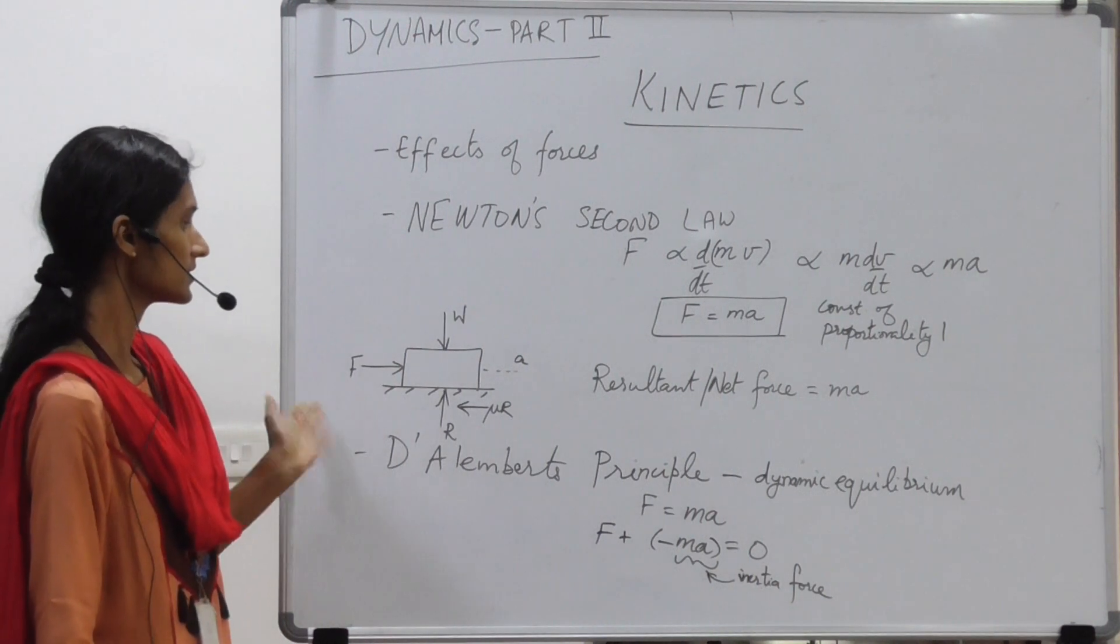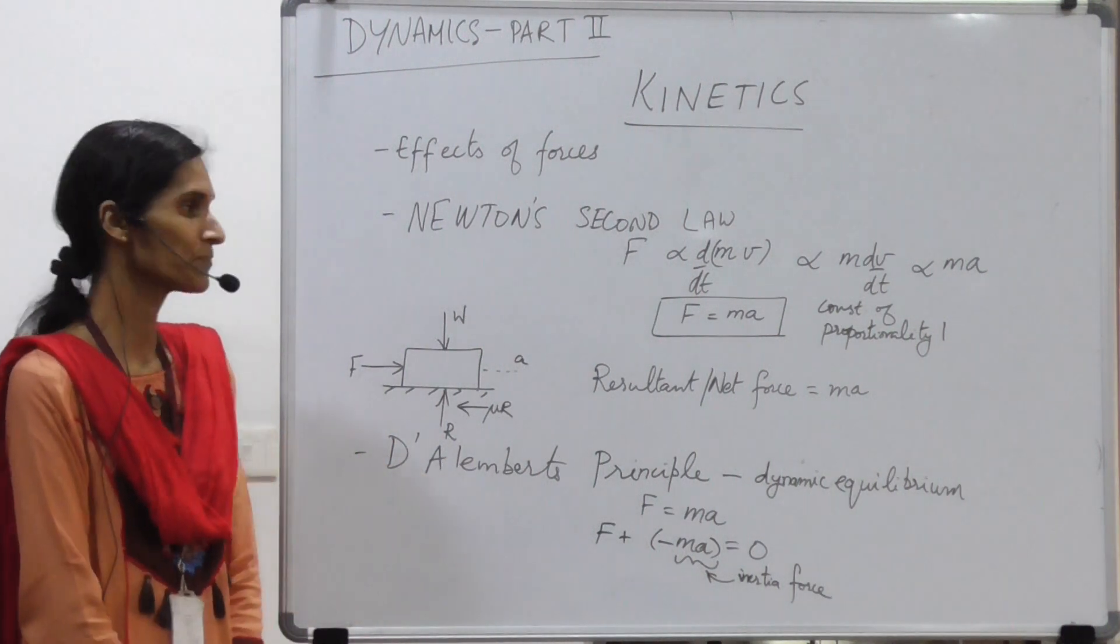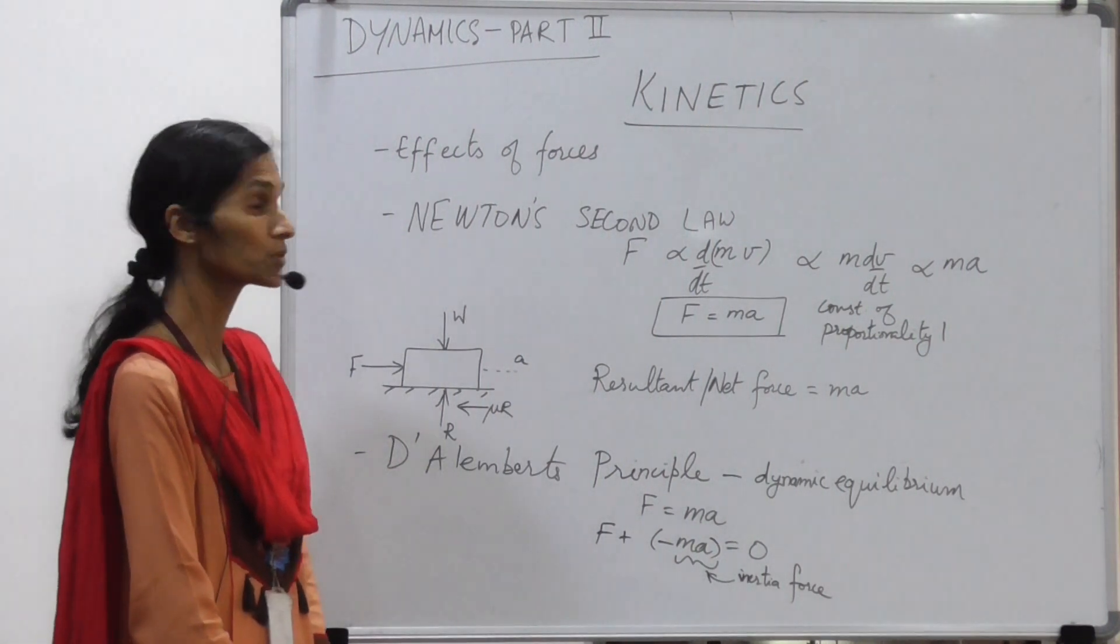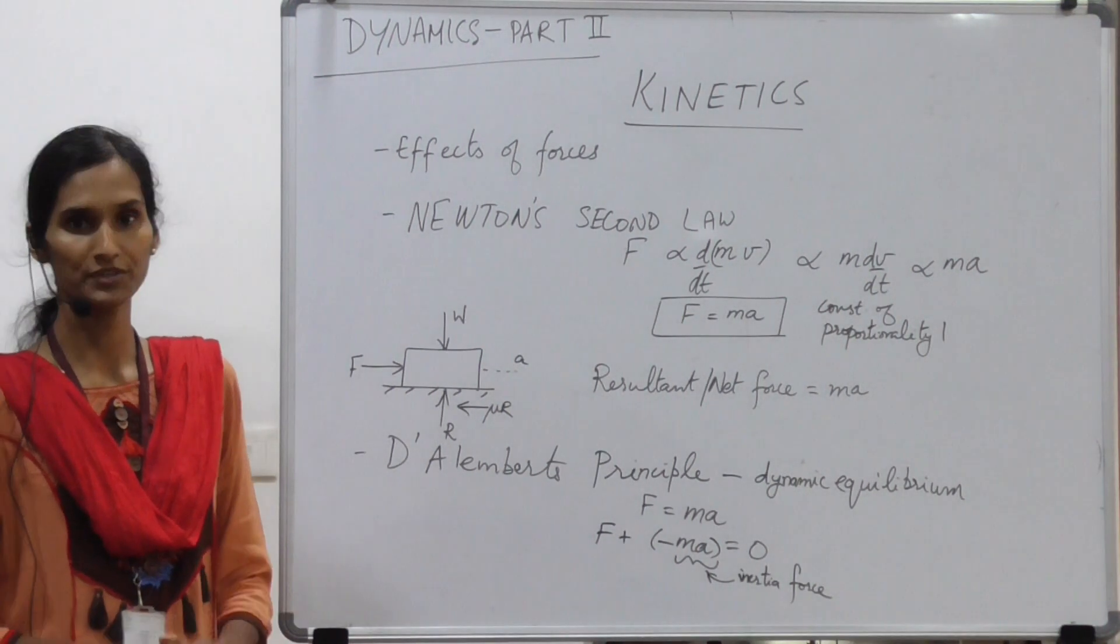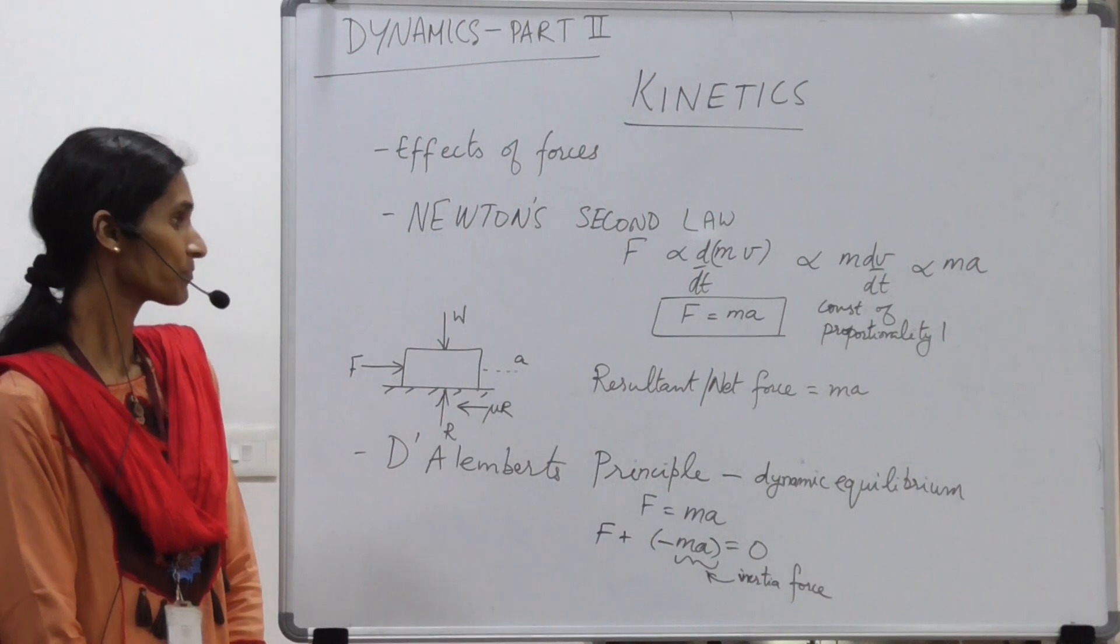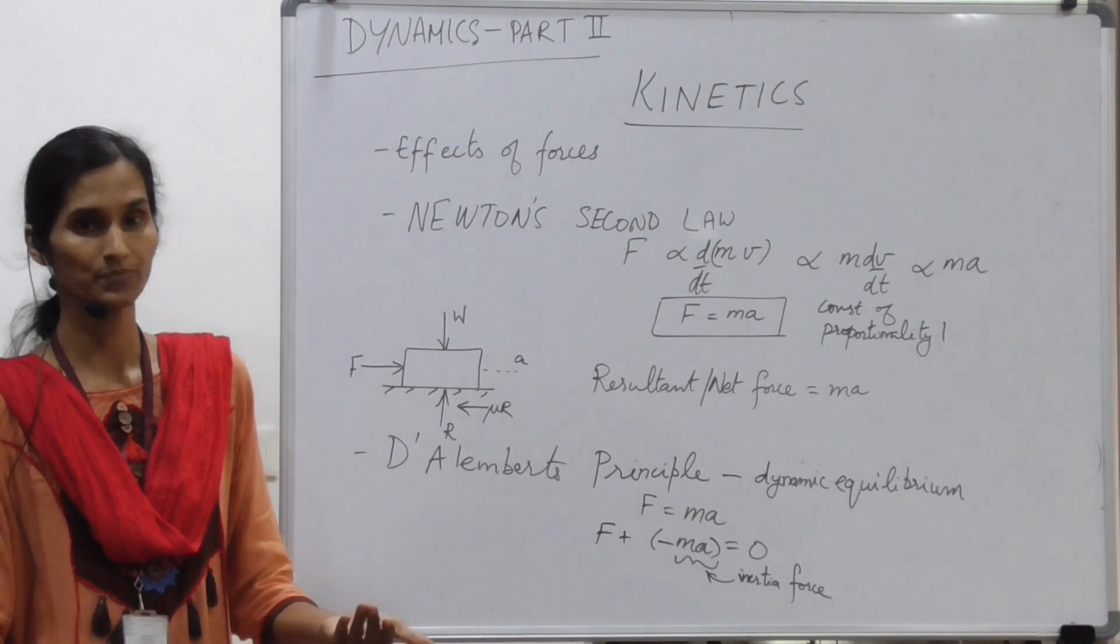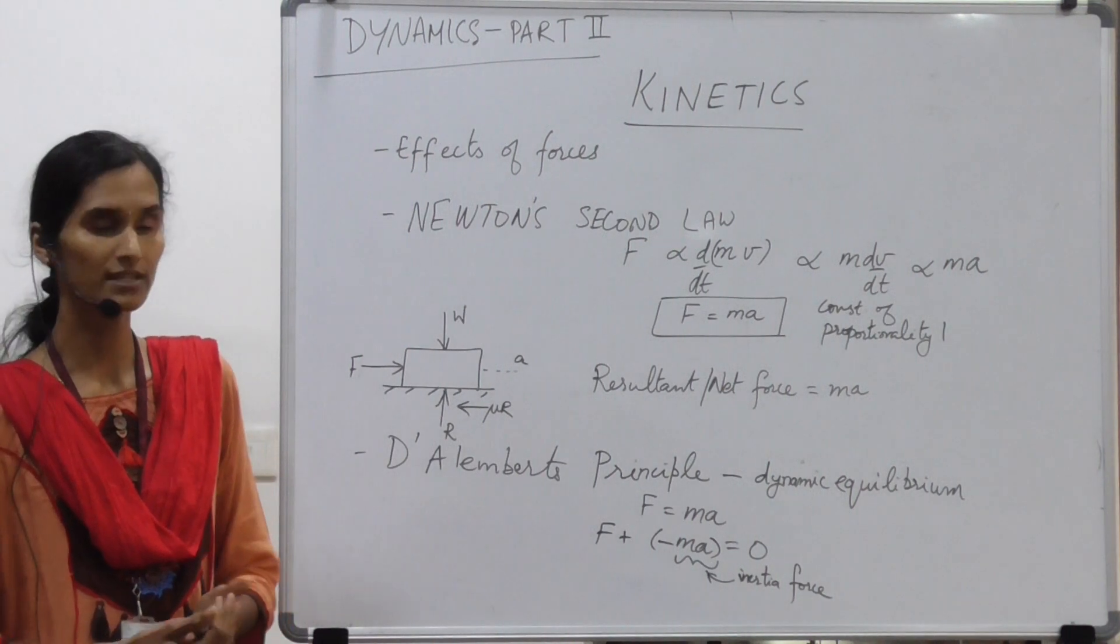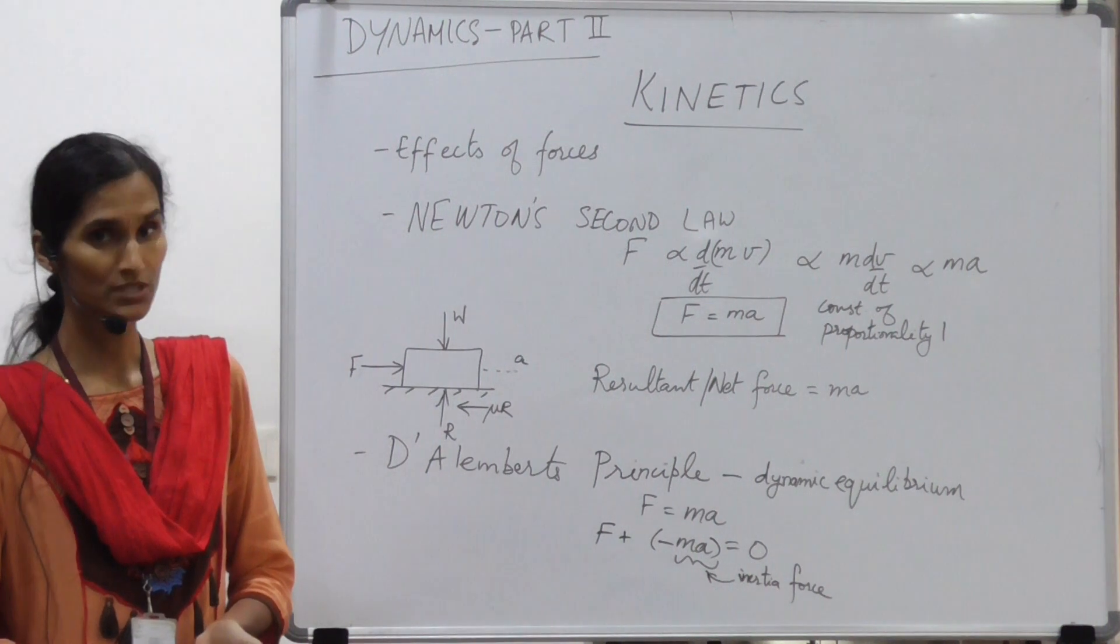When we consider the equilibrium of such a case, we come to the principle of D'Alembert. D'Alembert's principle took this equation of F equals ma from Newton's second law and he restated it in a different way saying that when forces act on the body, we can say that it resists the motion. Any object tries to be in the state of rest or in the state of its constant motion, which is stated by Newton's first law.